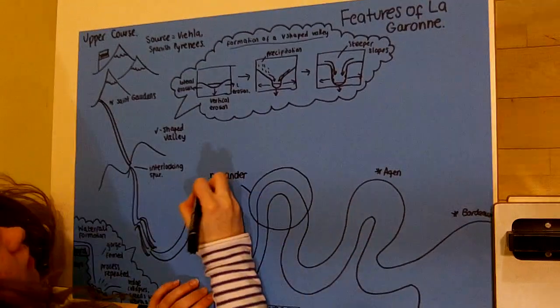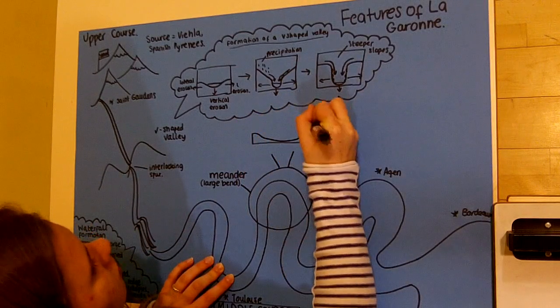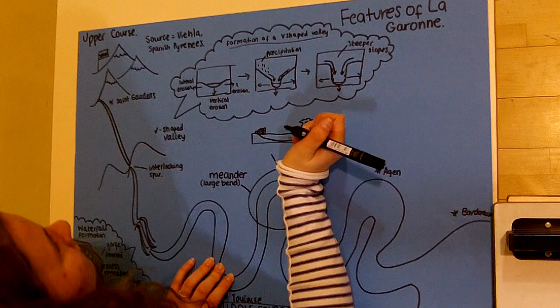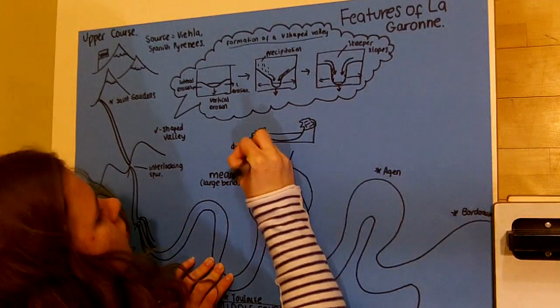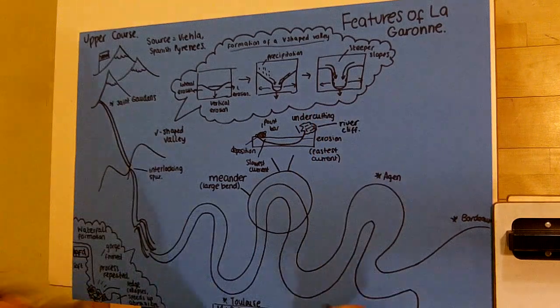The middle course of the river is characterised by meanders and oxbow lakes. Meanders are curves in the river that appear as the gradient of the river flattens. Lateral erosion becomes more significant than vertical erosion, with the river meandering in an attempt to find the lowest course on the valley floor.